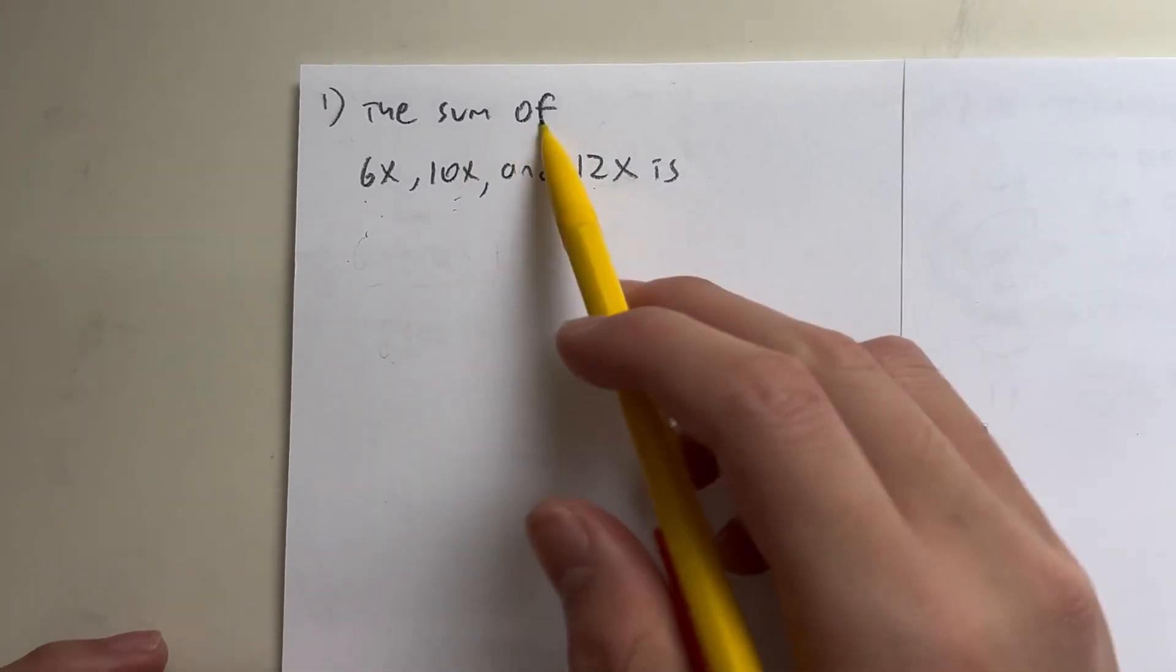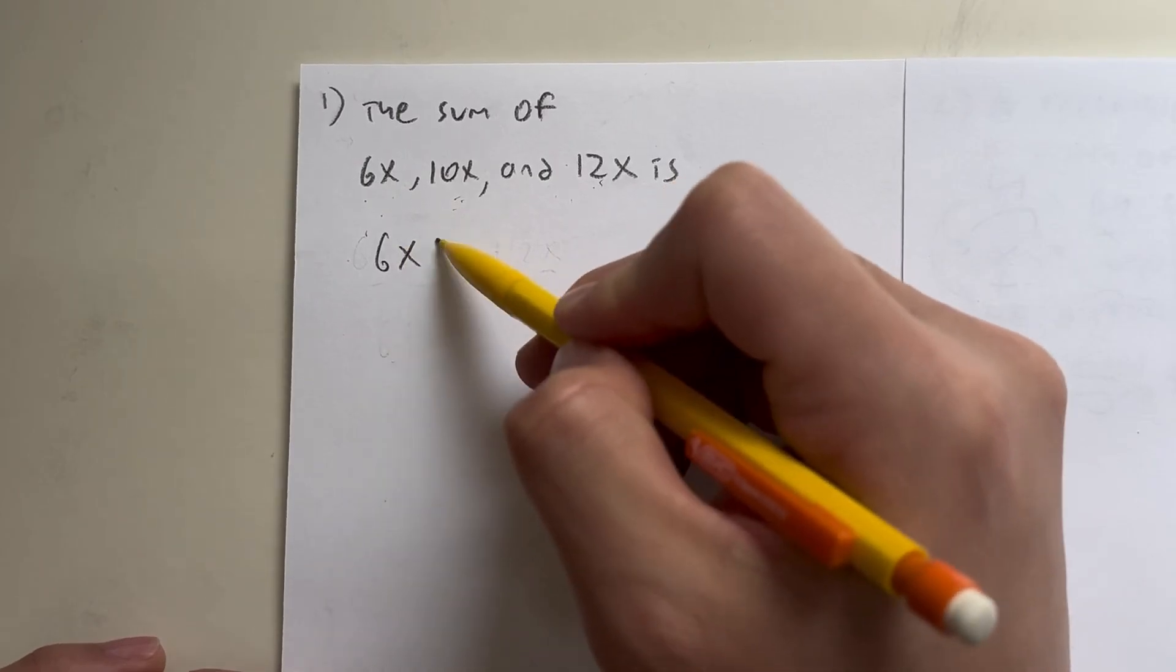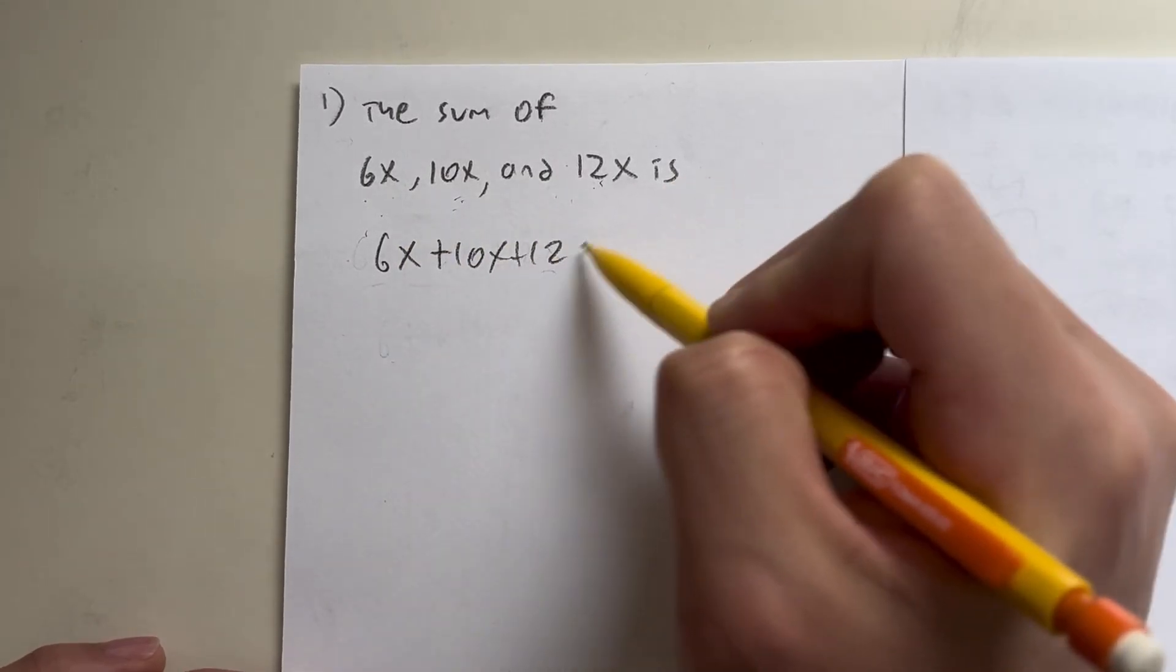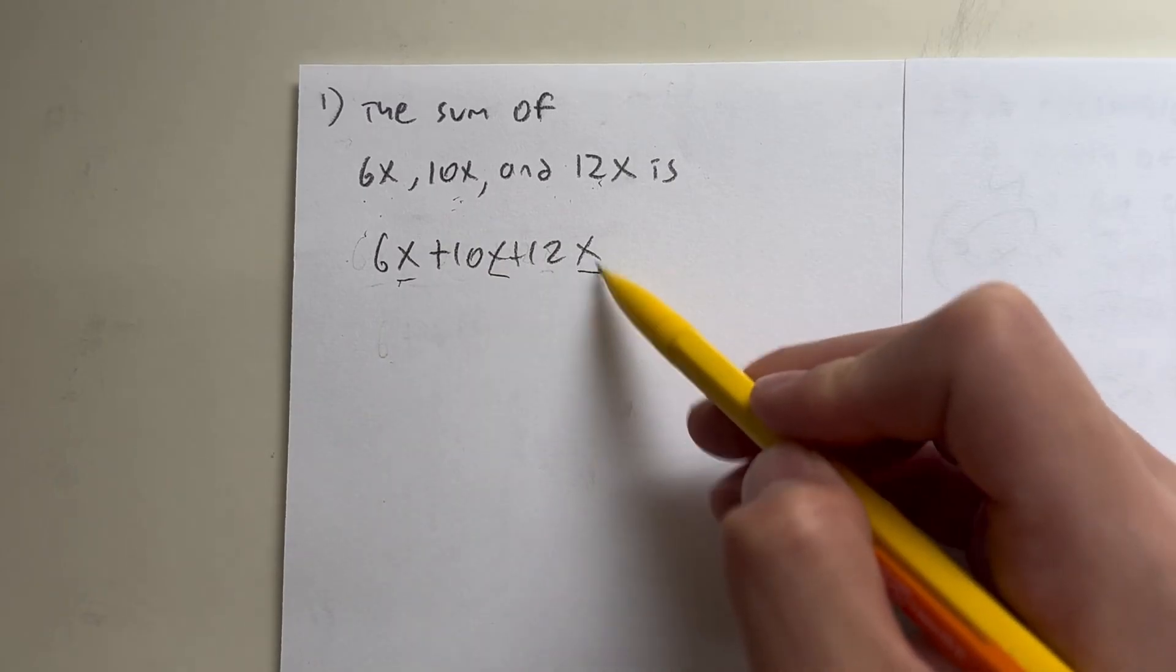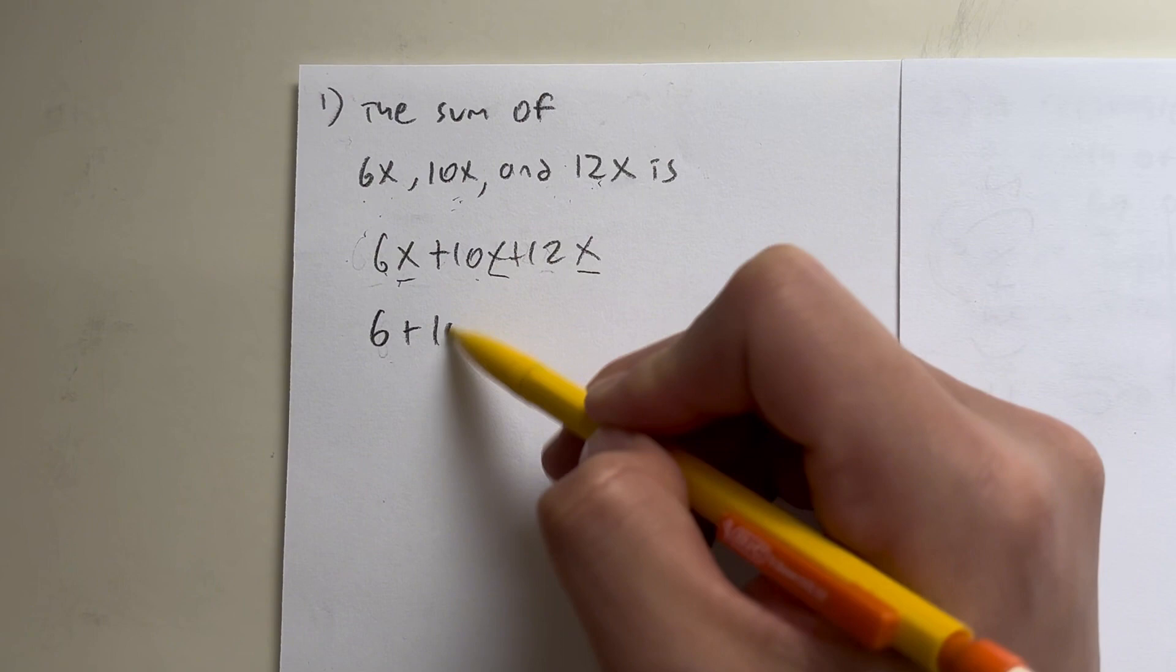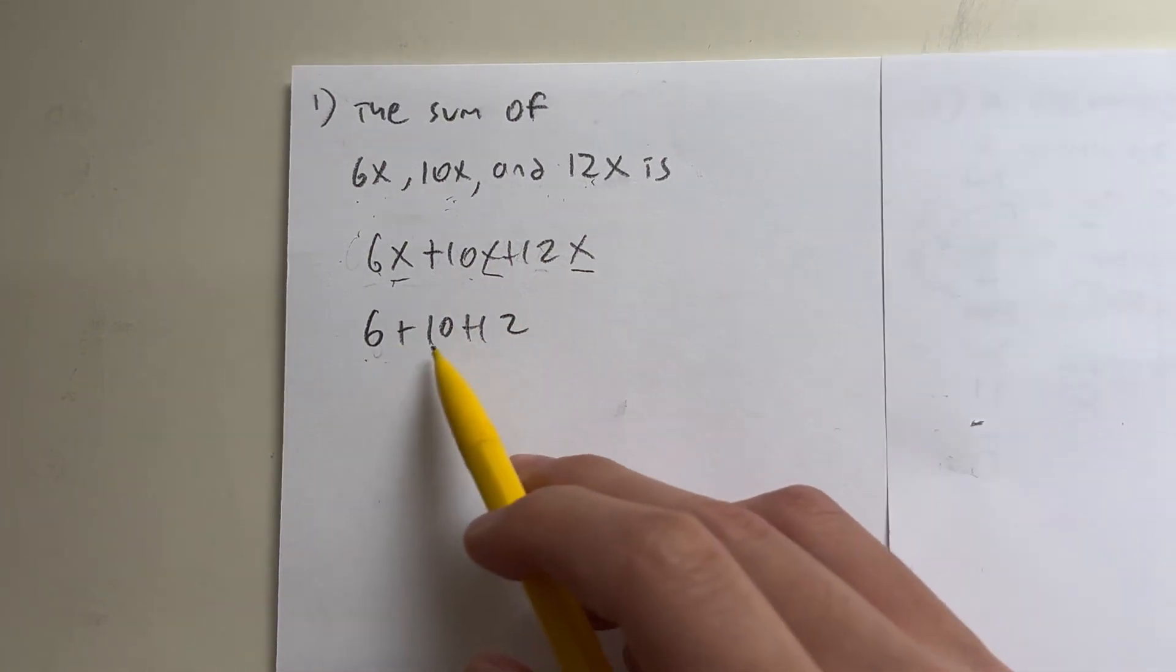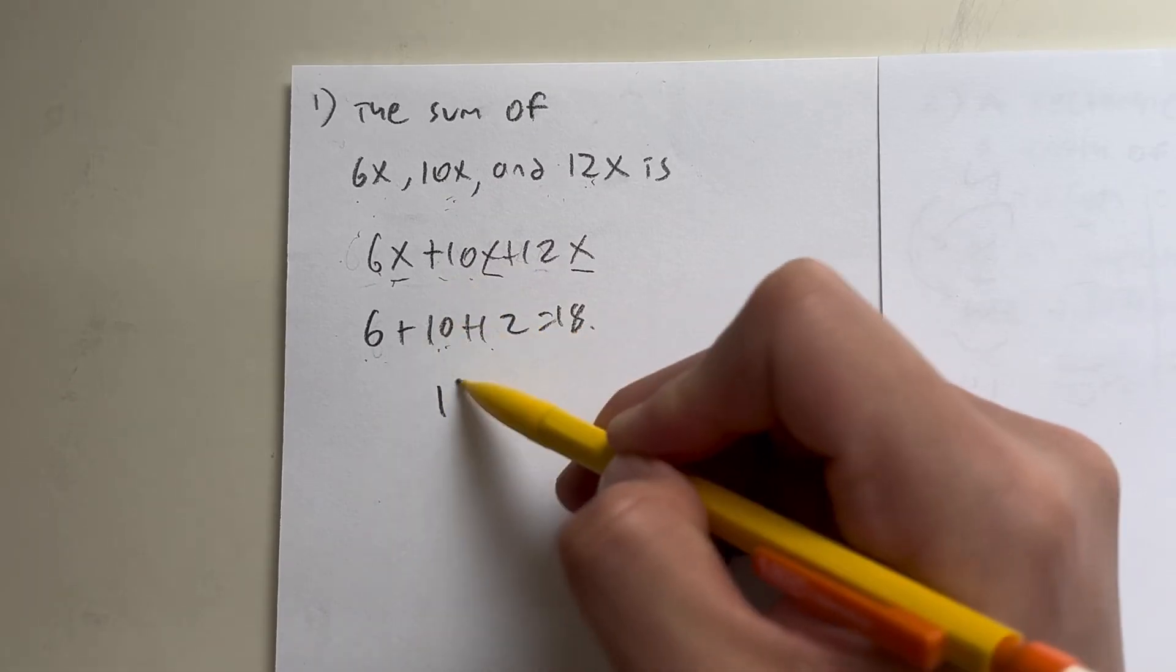So the first question he did was to find the sum of 6x, 10x, and 12x. And the sum means we just add them. So 6x plus 10x plus 12x. And it's pretty easy to do because when you have terms with the same exponent, you have to just add the coefficients, the numbers in front. 6 plus 10 is 16 plus 12, which is 28. And this just gives us 28x.